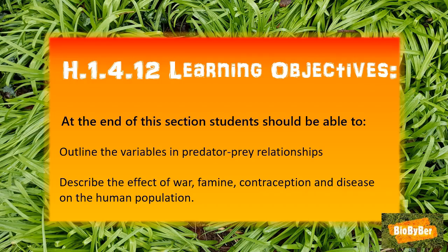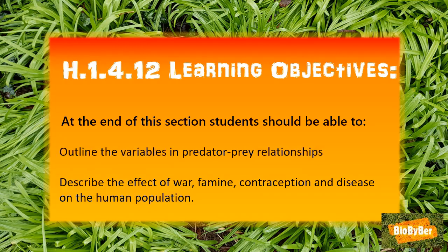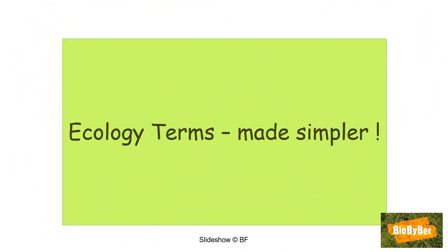Hi biologists, let's start by looking at the learning objectives for this lesson. These objectives pertain to the higher level paper only. At the end of this section, following the biology syllabus, you should be able to outline the variables in predator-prey relationships and describe the effect of war, famine, contraception, and disease on the human population.